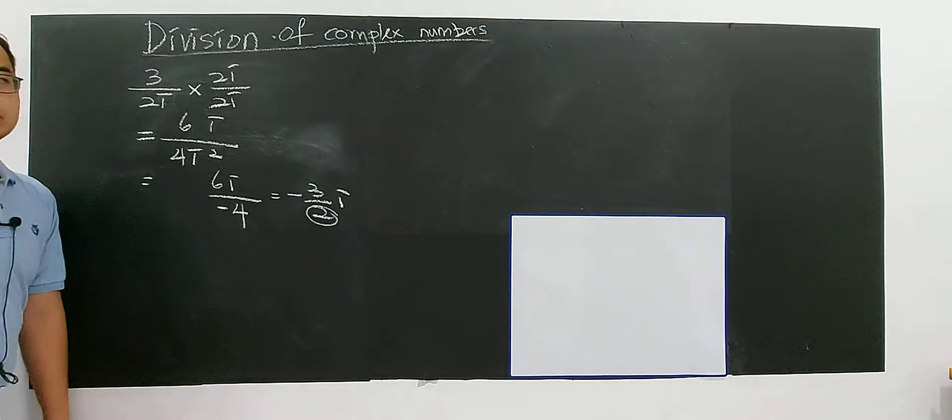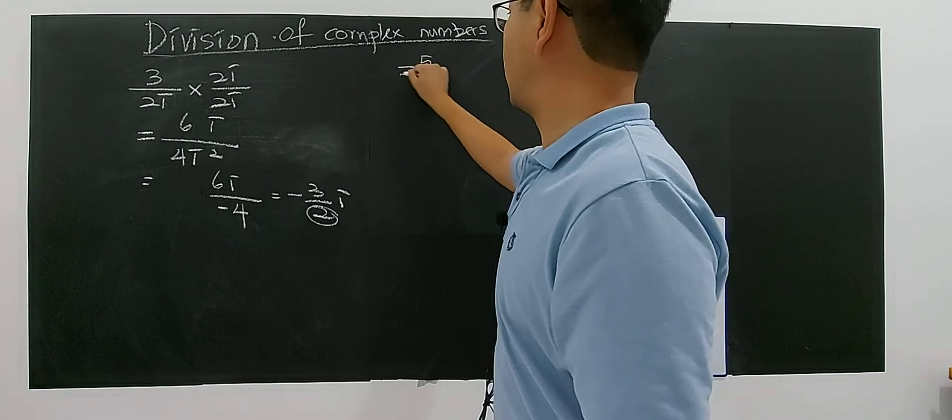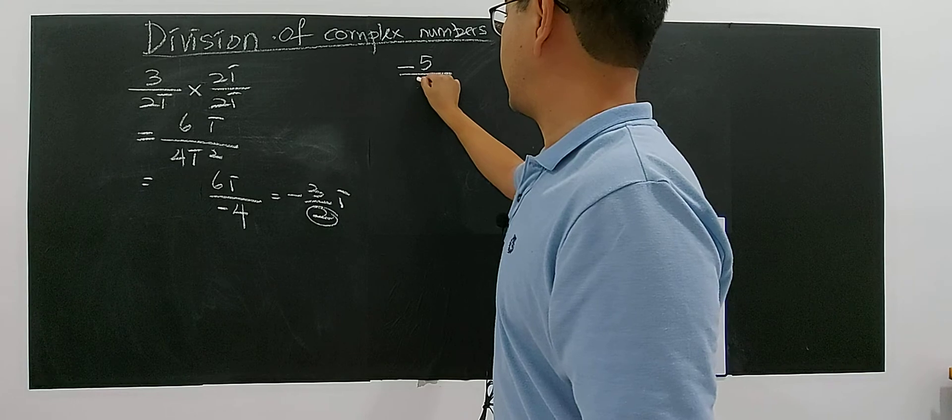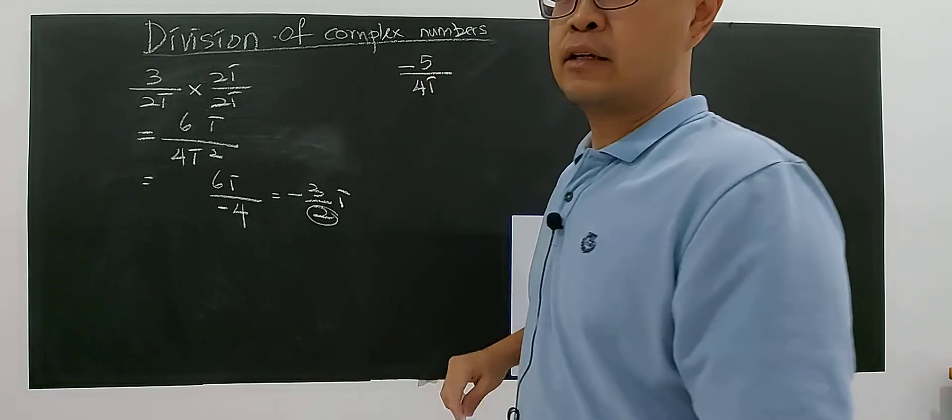So you have negative 3 over 2i. Right, now you see the denominator became a real number, okay? Let's say you have negative 5 over 4i, for example, 4i, okay?